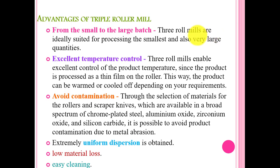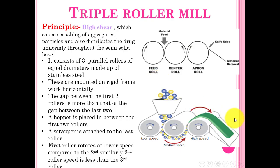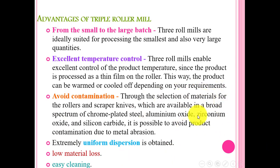The triple roller mill can be used for both small and large quantities. It offers excellent temperature control — a very important factor — as the production temperature can be excellently controlled during the process. The material appears as a thin film on the roller and can be collected by the scraper or knife. The product can be collected warm or cold depending on your requirement: collected warm for a long time, or cool for a short time.